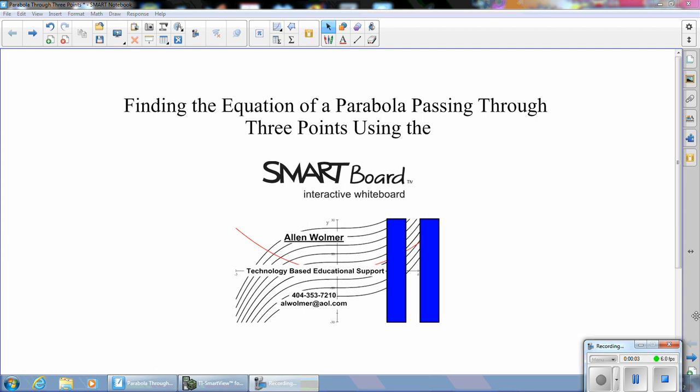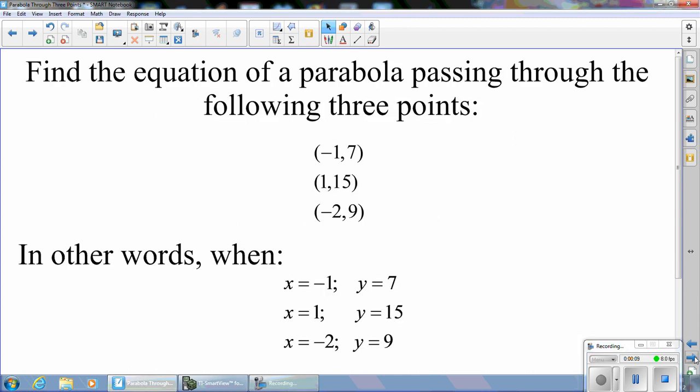This is Al Walmer. Today's segment is finding the equation of a parabola passing through three points. We wish to find the equation of a parabola passing through the following three points: negative 1, 7; 1, 15; and negative 2, 9.